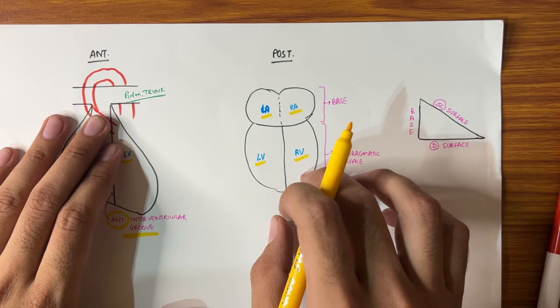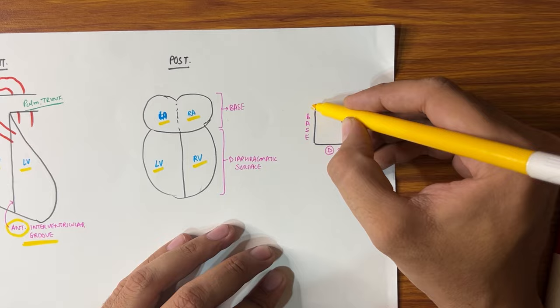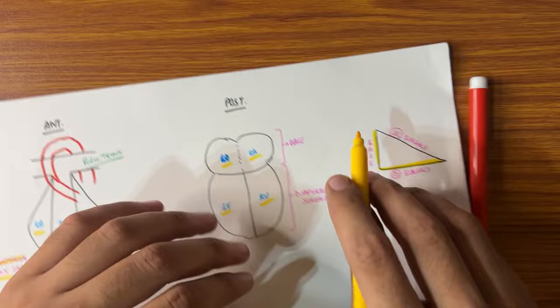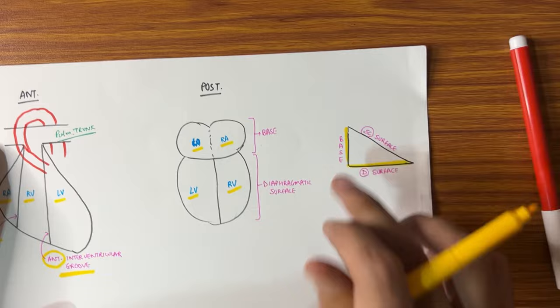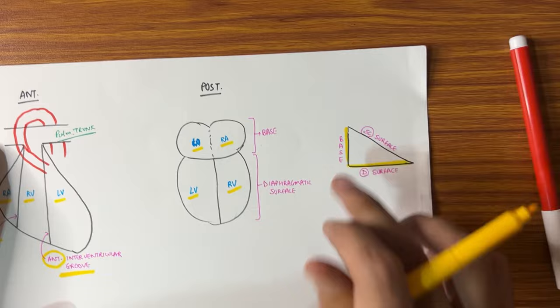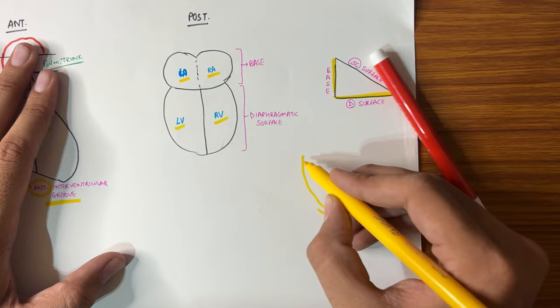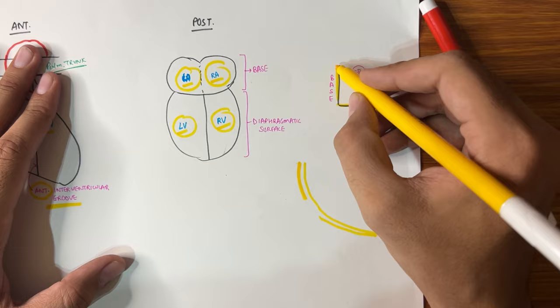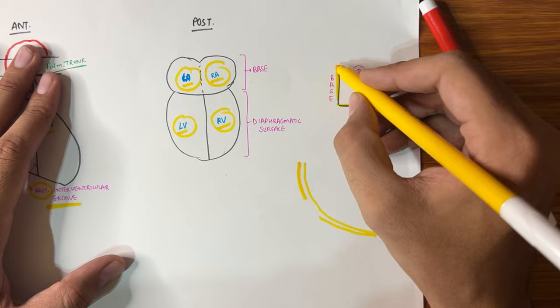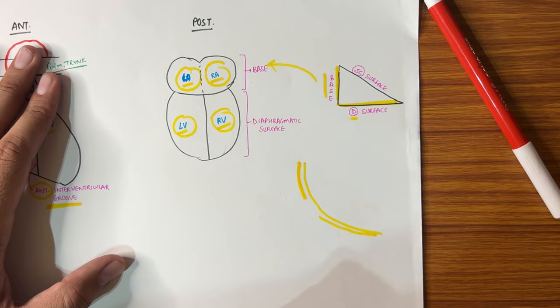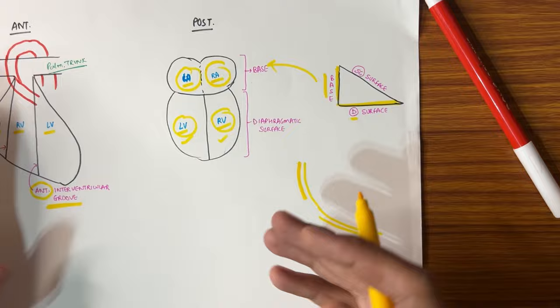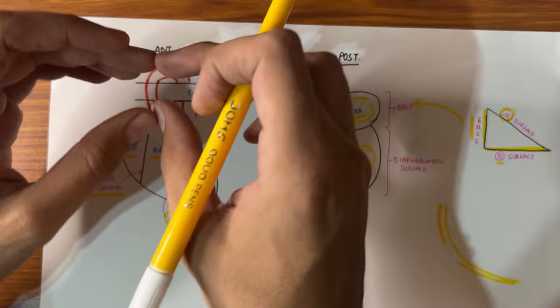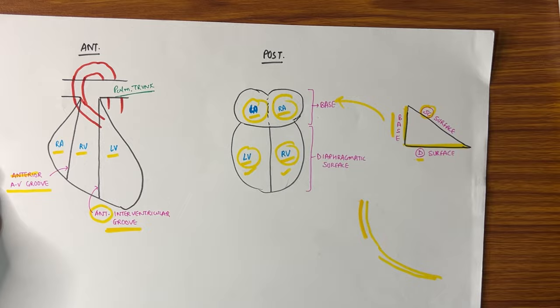If I try to show you, our heart looks something like this. This is the diaphragmatic surface and this is the base of the heart. The base of the heart is formed by both atria, and the diaphragmatic surface is formed by our ventricles. The surface that we see from the front is called the sternocostal surface, because it faces the sternum and costal margins. So we have three named surfaces: base, sternocostal, and diaphragmatic.